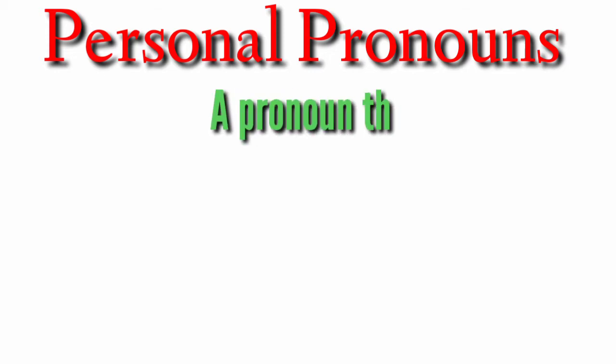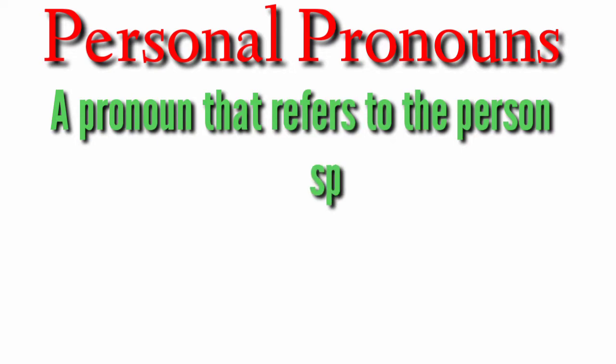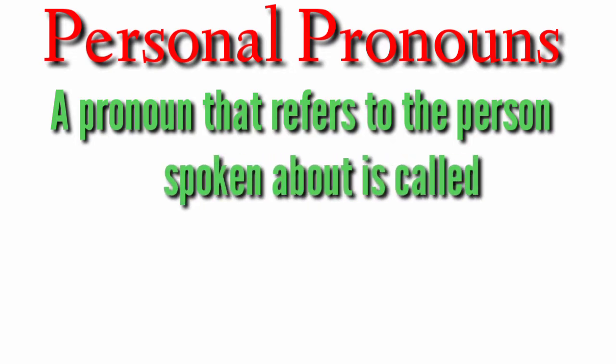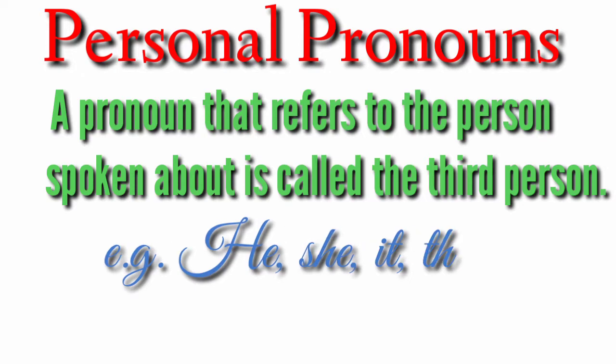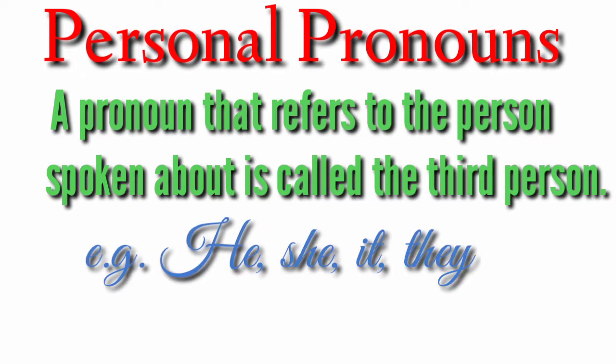What is the third person? A pronoun that refers to the person spoken about is called the third person. The speaker is first person, the listener is second person, and the person spoken about — that someone else — is in the third person. For example, he, she, it, they are called the third person. He, she, it are singular, and 'they' is plural.